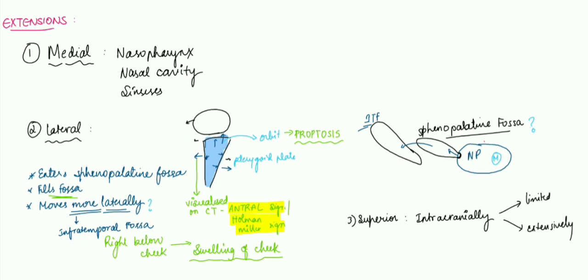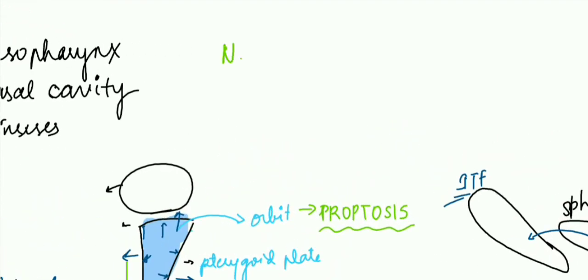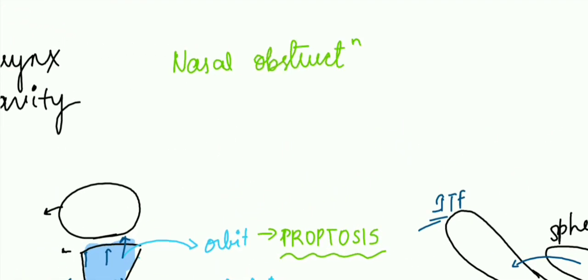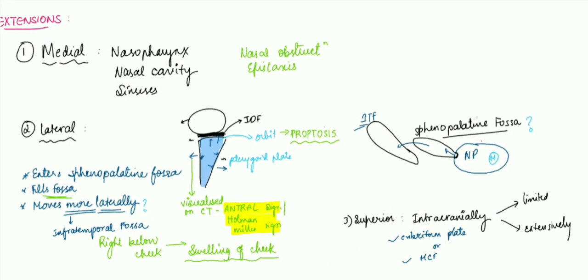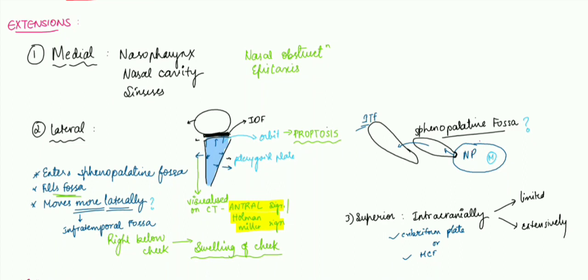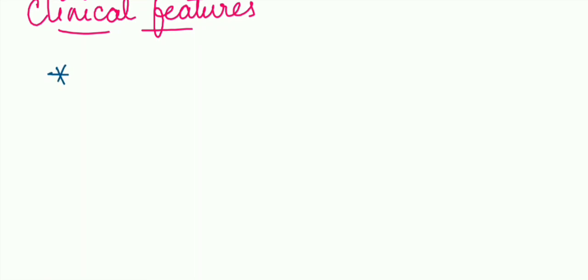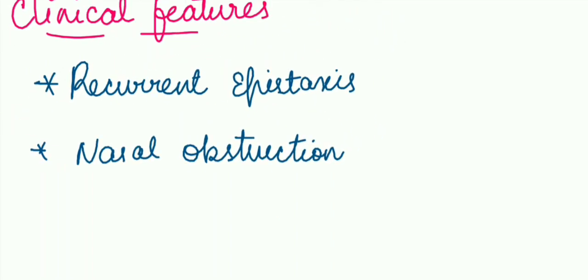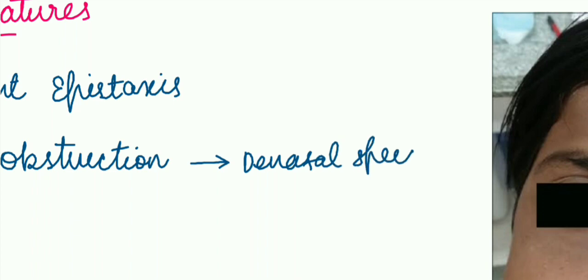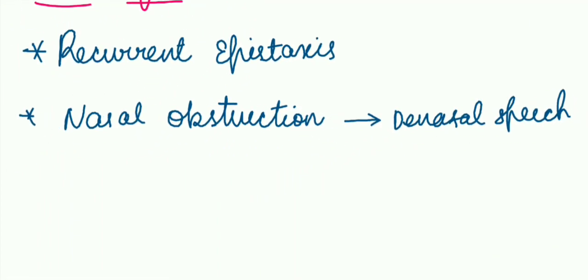Let us also talk about how the medial extension can be implicated. It can cause nasal obstruction and epistaxis. So here we are seeing all the extensions: medial, lateral, and superior, and their clinical implications. Now let's see the clinical features. Let's start with recurrent epistaxis because of medial extension, and then nasal obstruction, again because of medial extension. This results in denasal speech.